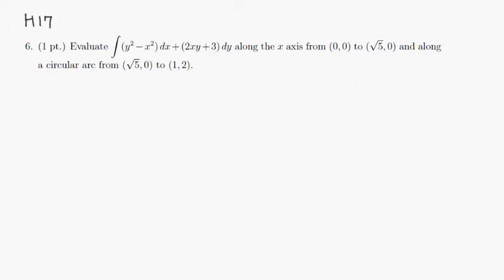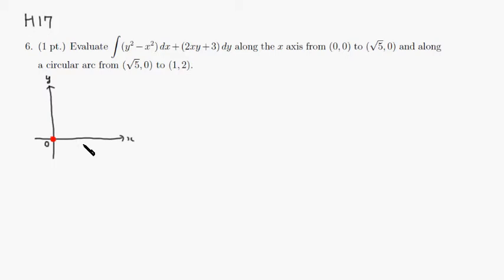Let's sketch that path. Here's the x-axis and here's the y-axis. The path is going to start from (0,0) and go to (√5, 0), which is somewhere around here. The final point would be (1, 2), so somewhere around here — so (1, 2).